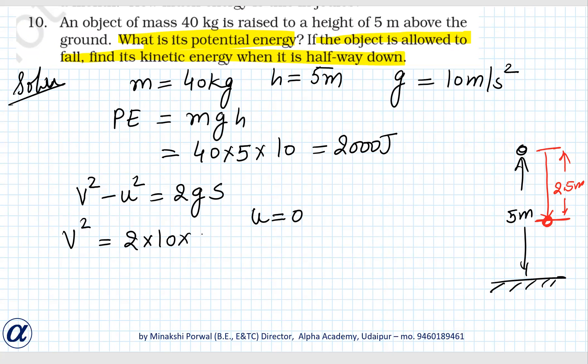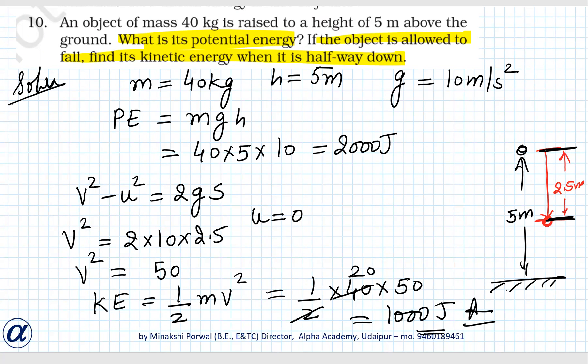Distance from the top to this point is 2.5 meters, so it is 50. V squared is 50. Kinetic energy will be half mv squared, so it is 1 by 2, mass is 40, and v squared is 50. That is equal to 20, so it is 1000 joules. This is the answer.